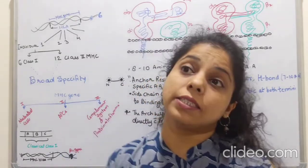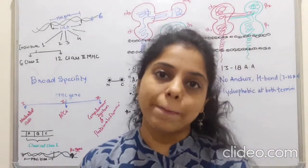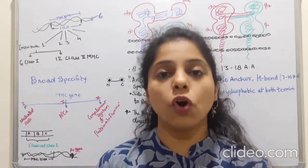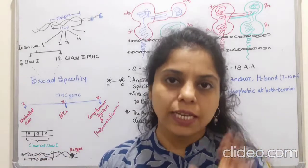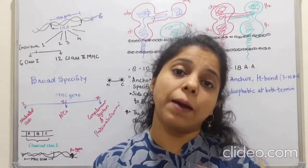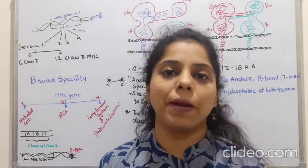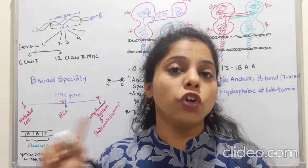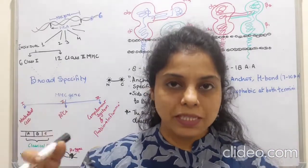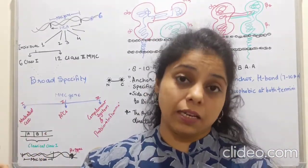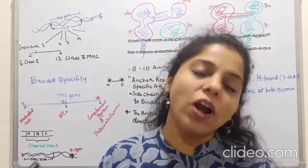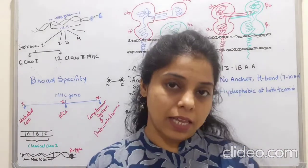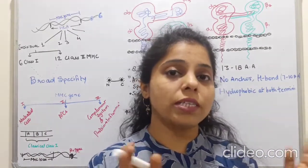As I have already told you, the MHC gene — if we talk about human — these MHC genes are present on chromosome number 6. If we talk about mice, then chromosome number 17. Human means 6, mice means 17. In humans, the MHC coding genes are collectively called as the Human Leukocyte Antigen, while in mice it is called as the H2 complex.